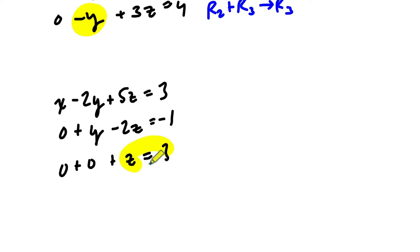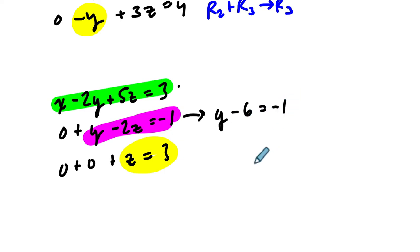And if you see what's nice about this is we now know what z is. We can then use that to solve the second equation, and then all of that to solve the third. Okay, so if z is 3, what is y? Well, it's y minus 6 because 2 times 3 is 6. That equals negative 1. I add 6 to both sides, and y is 5.